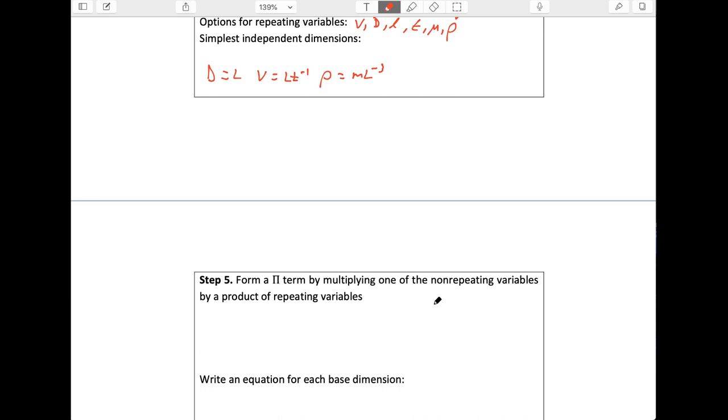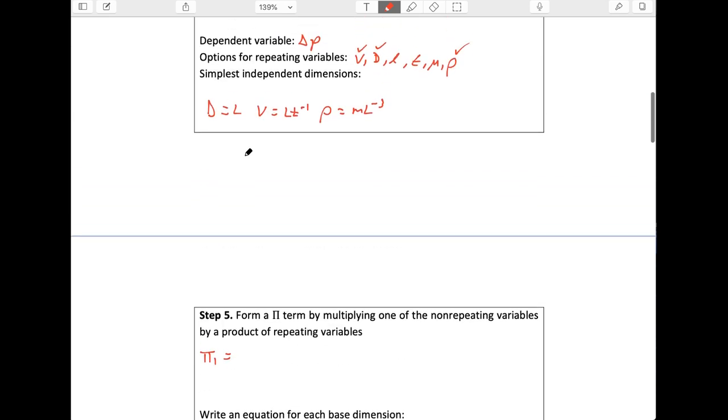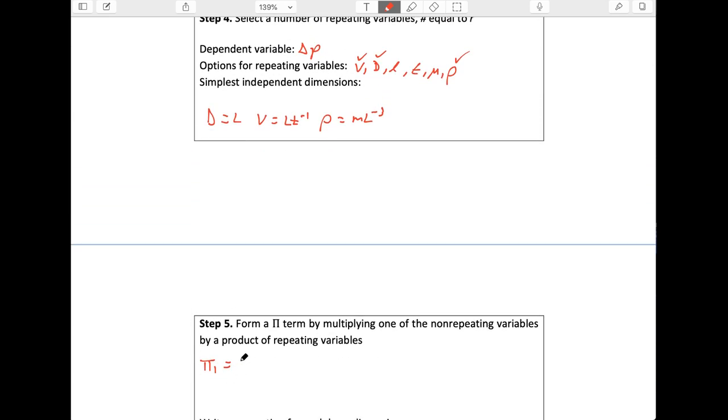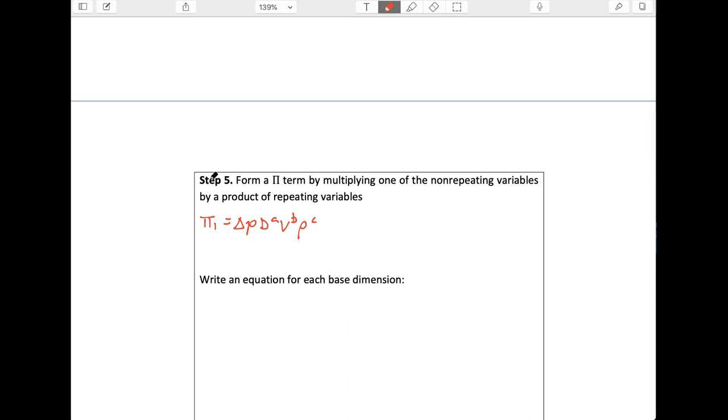So let's start out with our first one. Our first pi term, pi one, is going to be our dependent variable, which is delta P. And we're going to multiply that delta P by our repeating variables raised to powers A, B, C. Next, we just sub in each of these things' base dimensions.